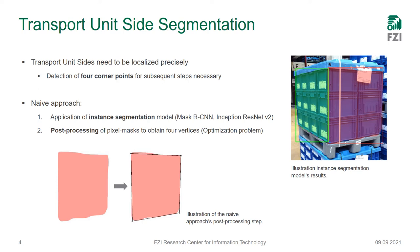In our first implementation, we started with an approach of first using an instance segmentation model, namely Mask R-CNN with an Inception ResNet V2 backend, and performed a post-processing step to simplify that mask to four precise corner locations by solving an optimization problem, which places the four corner locations such that the region induced by them has the highest overlap with the instance segmentation mask found by Mask R-CNN.